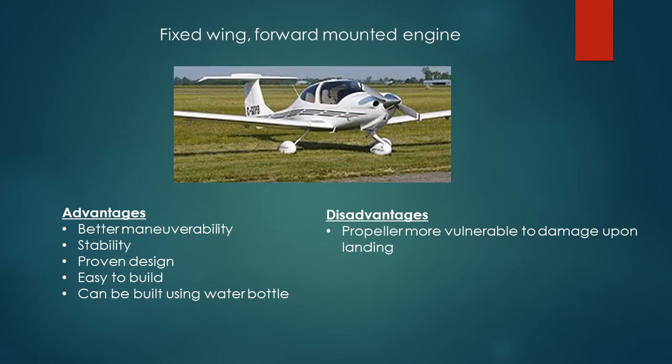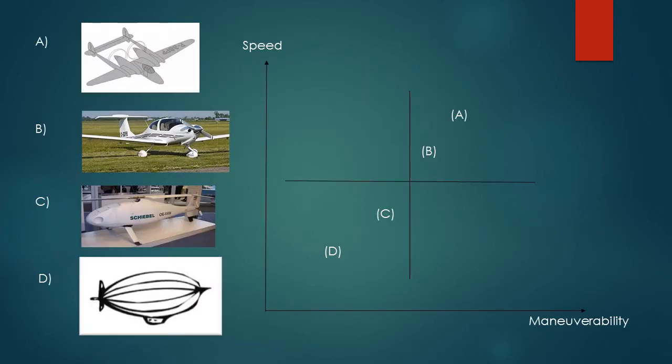Lastly, we have the fixed wing forward mounted engine, which is the design we are going to build. For advantages, it has better maneuverability, stability, a proven design that many people have tested before, and is easy to build. For disadvantages, the propeller is more vulnerable to damage upon landing. This is the speed versus maneuverability graph.